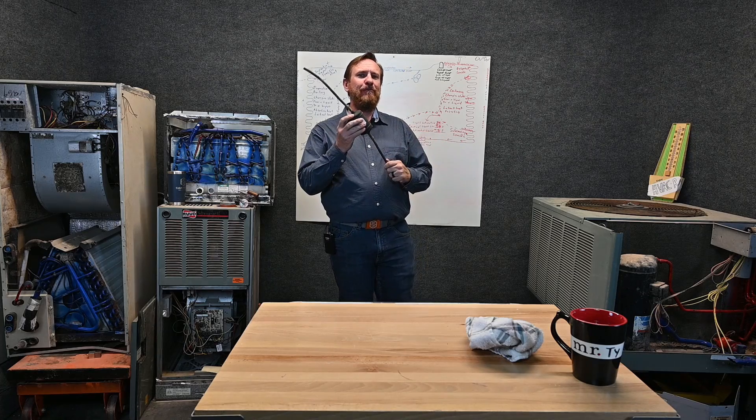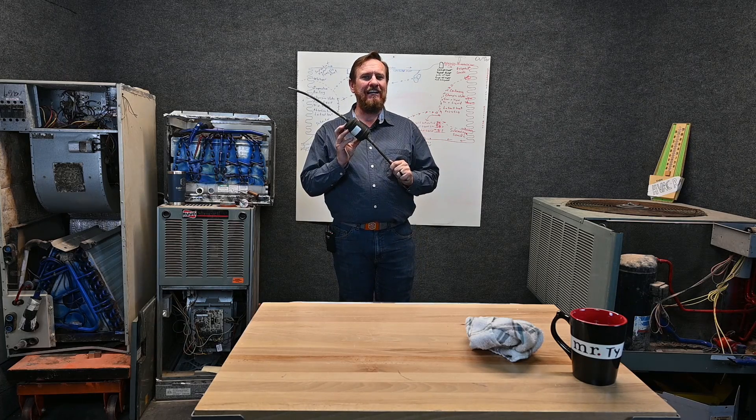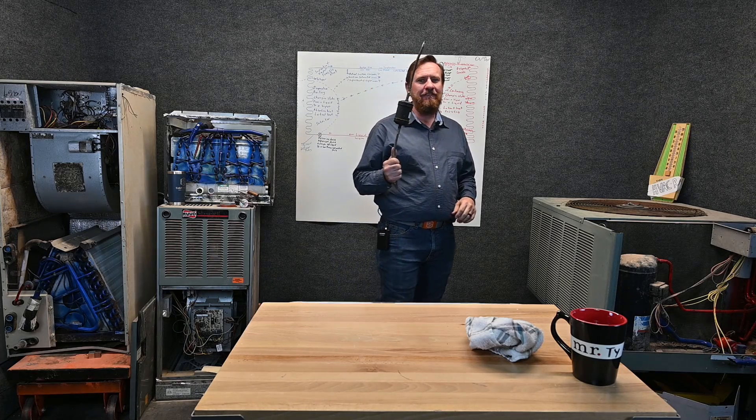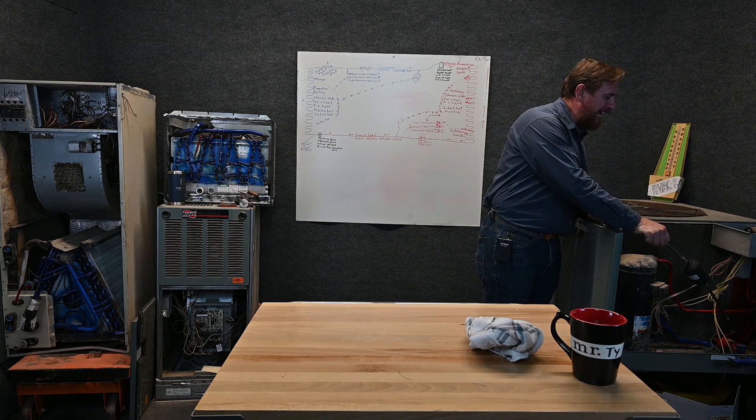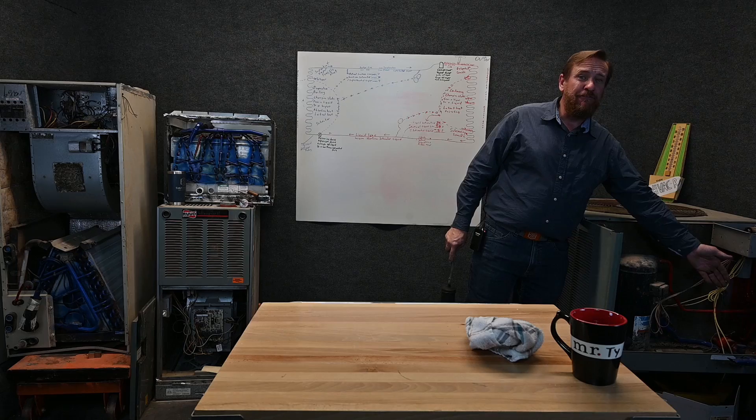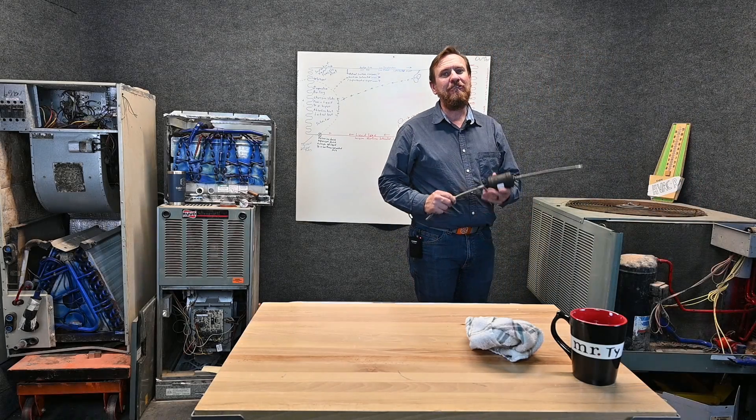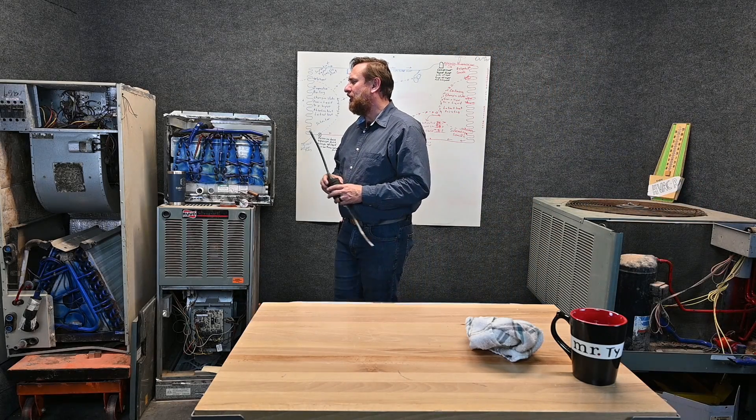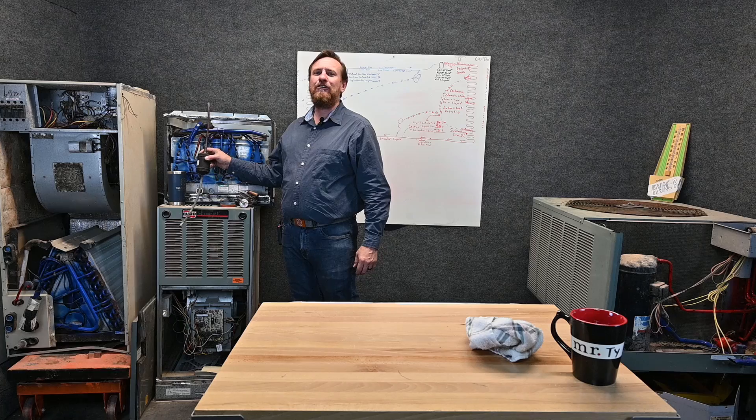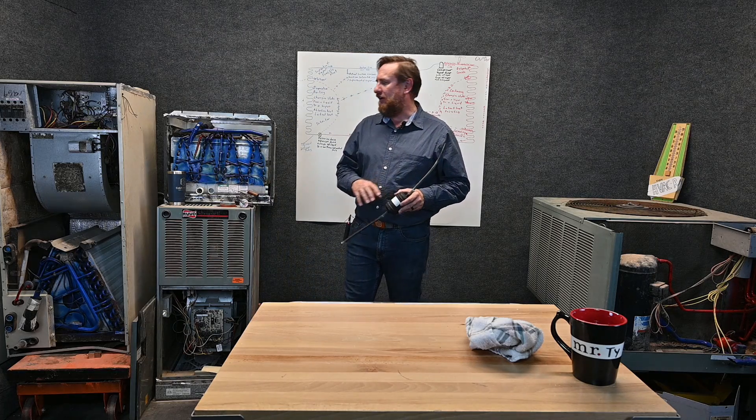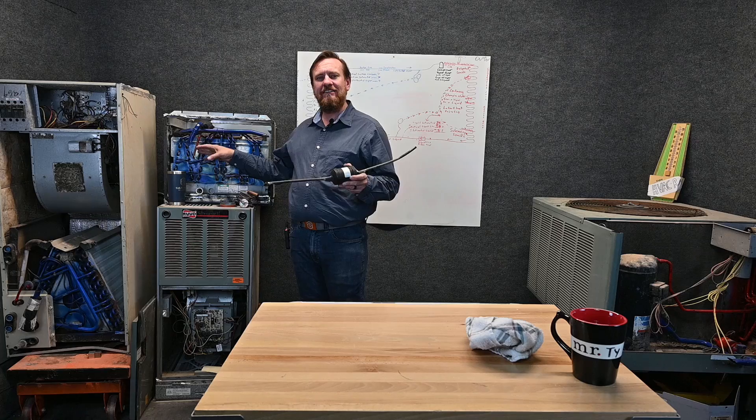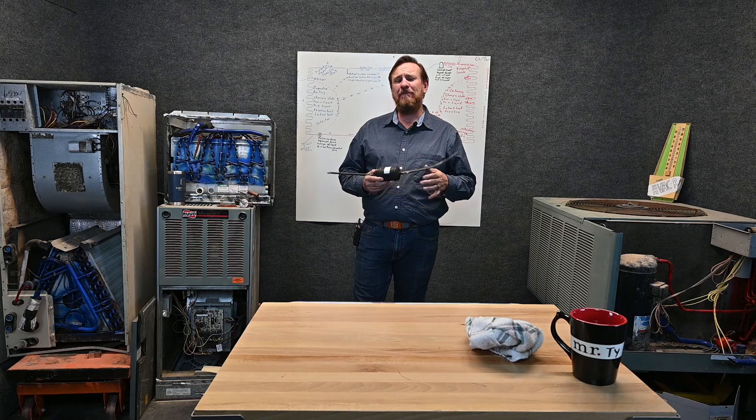This liquid line somewhere on it will have a liquid line filter dryer. Now that liquid line filter dryer can be on the liquid line inside of the outdoor unit but it's still going to be after the condenser but it may be before the valve. That liquid line filter dryer can also be located in the house right before the evaporator. Ideally your liquid line filter dryer goes before your metering device to protect it, but where that's located really depends on your environment.